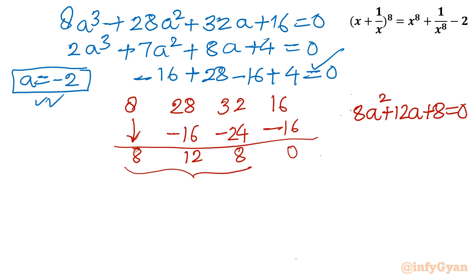Dividing this quadratic equation by 4, we get 2A^2 + 3A + 2 equals 0. Now let us apply the quadratic formula to find A.